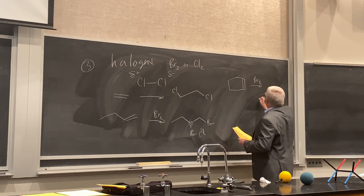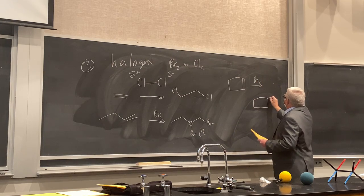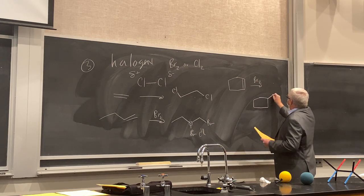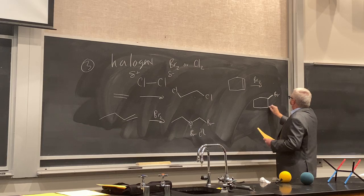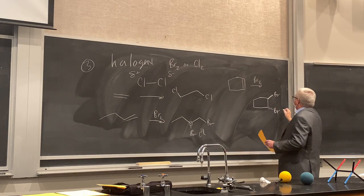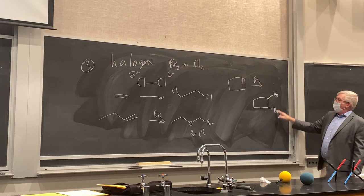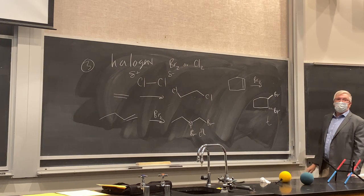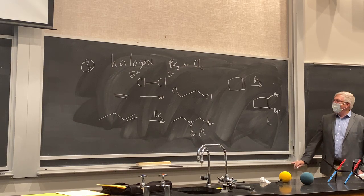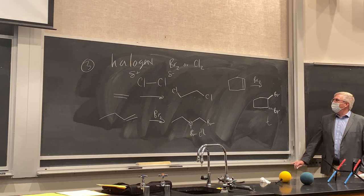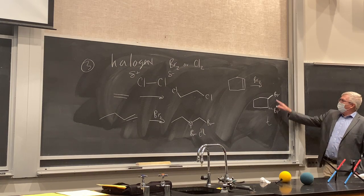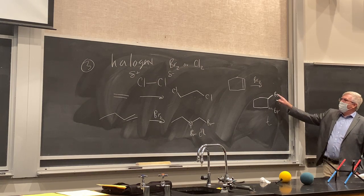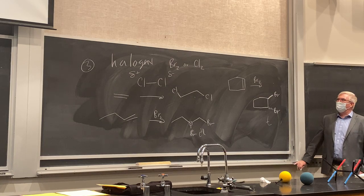For bromination of cyclohexene, the two bromines will be trans to each other — don't draw the cis product. There are stereochemical consequences of the mechanism that we need to examine.